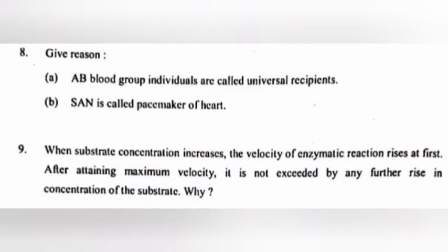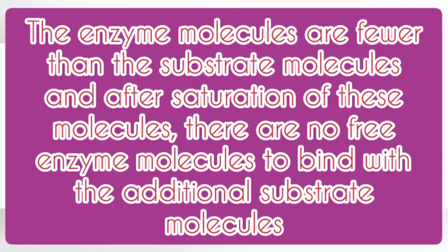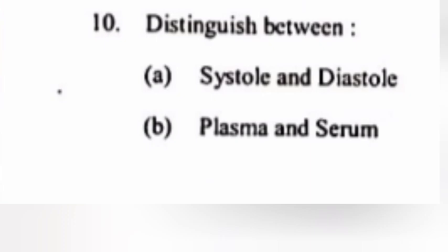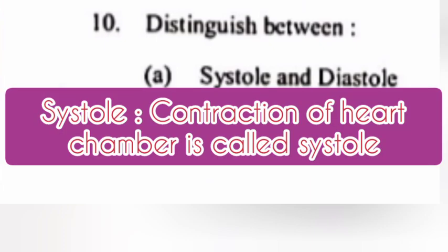9. When substrate concentration increases, the velocity of enzymatic reaction rises at first, but after attaining maximum velocity it is not exceeded by any further rise in concentration of the substrate. Why? Answer: The enzyme molecules are fewer than the substrate molecules, and after saturation of these molecules there are no free enzyme molecules to bind with the additional substrate molecules.